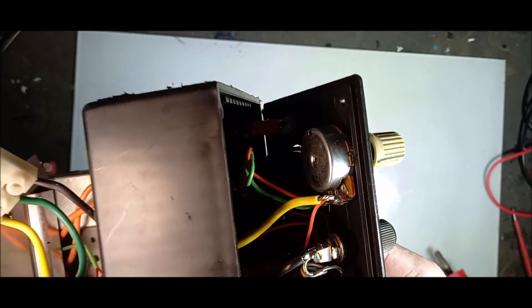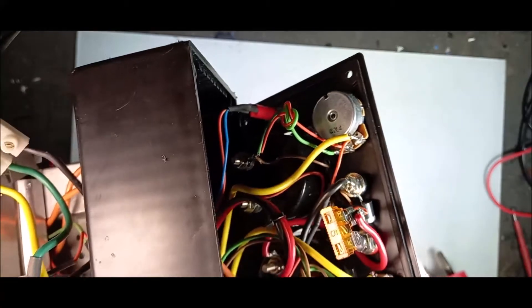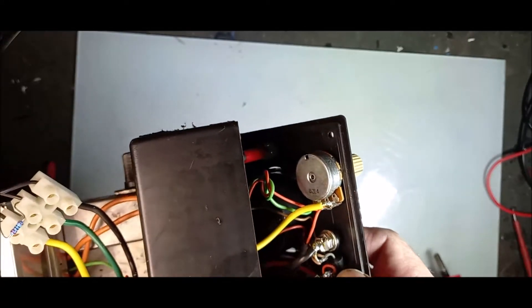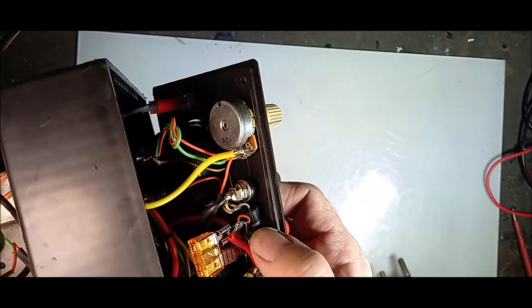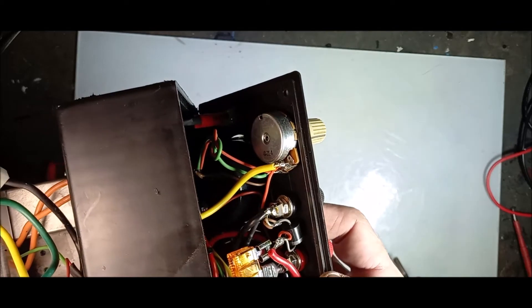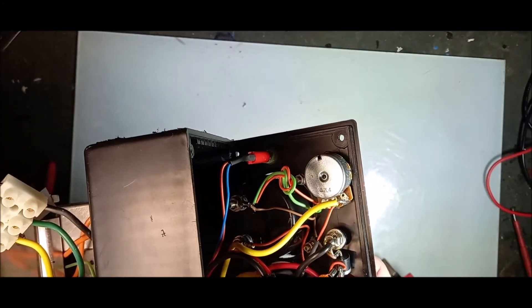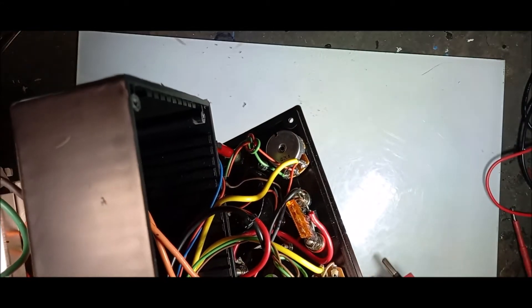If you ever charge a battery with this power supply and you put the polarity wrong, you blow your power supply. When you put an output diode on there, the moment you put the wrong polarity it shorts out, then it protects your power supply. Just for interest sake.